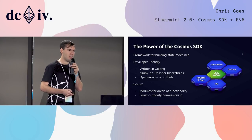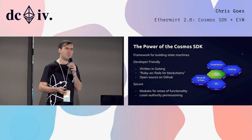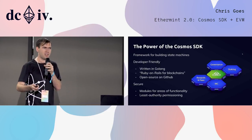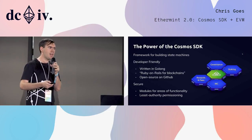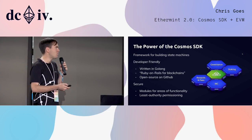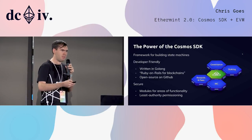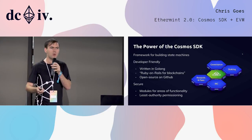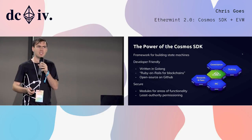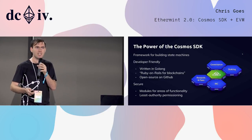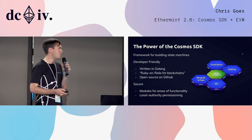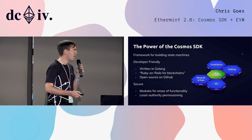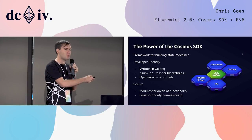The Cosmos model envisions a network of interconnected blockchains. These blockchains will be application-specific. They will do lots of different things, but talk to each other. In order to facilitate this, we need to make it really easy to build an application-specific blockchain. To do that, we've built the Cosmos SDK.